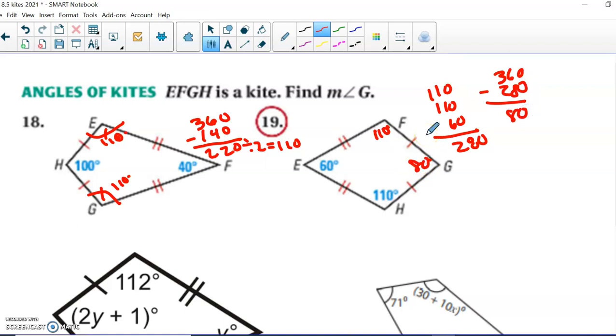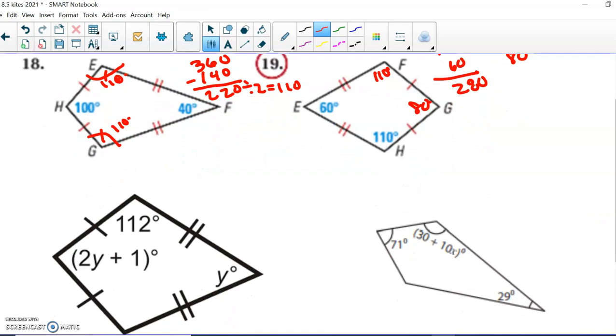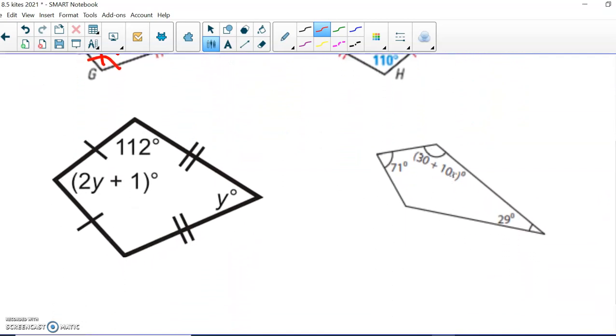So the first thing I would do is I'd say, if this angle is 112, I know immediately this angle is 112. And again, you know all quadrilaterals have 360 degrees.